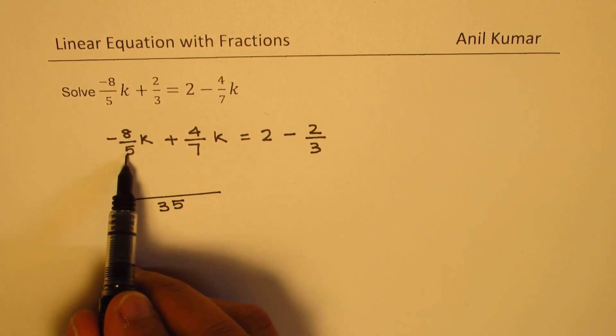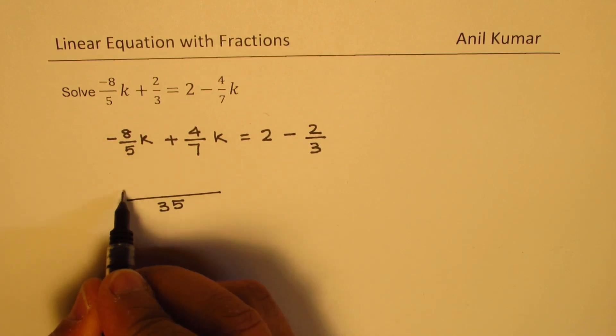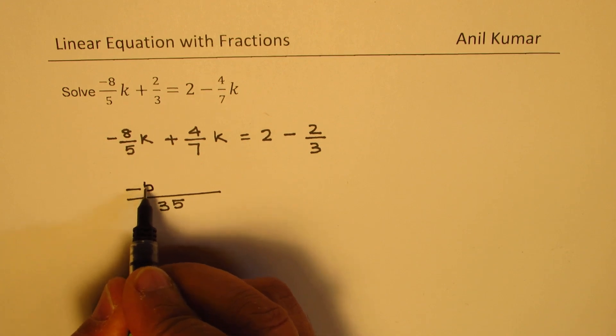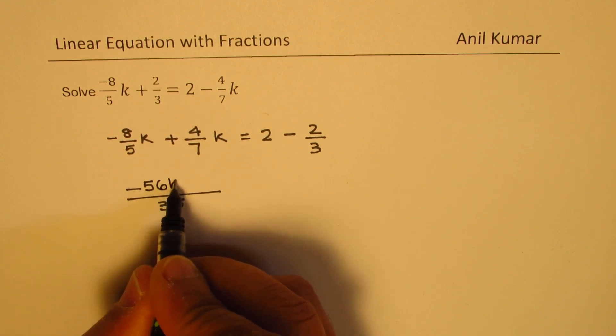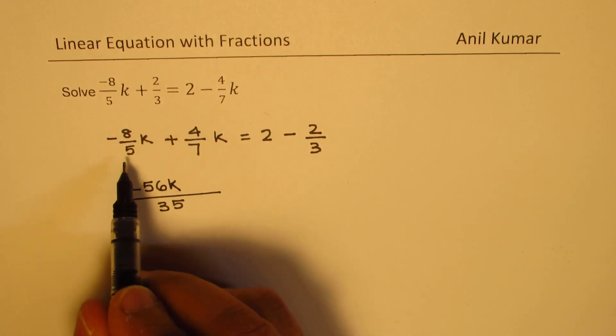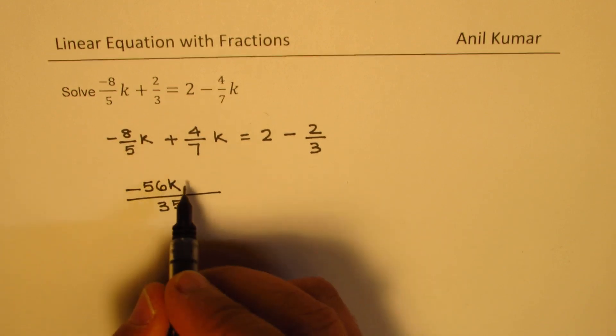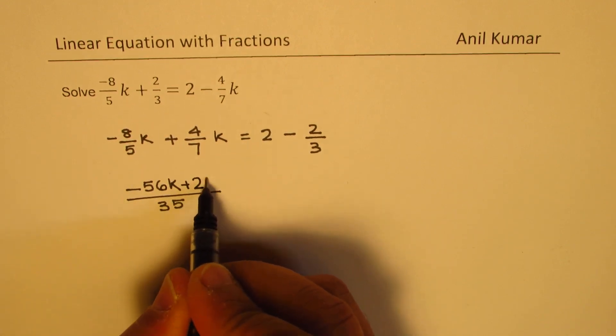To get 35 I have to multiply the numerator and denominator by 7. So this 8 gets multiplied by 7. So 8 times 7 is 56. We get minus 56k. On this side 5 gets multiplied with 4. So we get plus 20k.